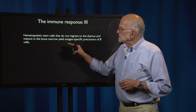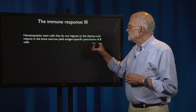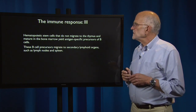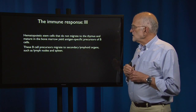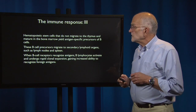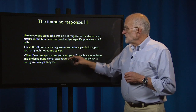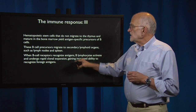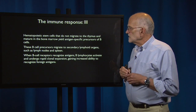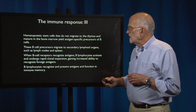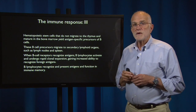Hematopoietic stem cells that do not migrate to the thymus and instead mature in the bone marrow yield antigen-specific precursors of B cells. The B cell precursors migrate to secondary lymphoid organs such as lymph nodes and spleen. When B cell receptors recognize antigens, B lymphocytes activate and undergo rapid clonal expansion, gaining increased ability to recognize foreign antigens. B lymphocytes recognize and present antigens, and they function in immune memory.